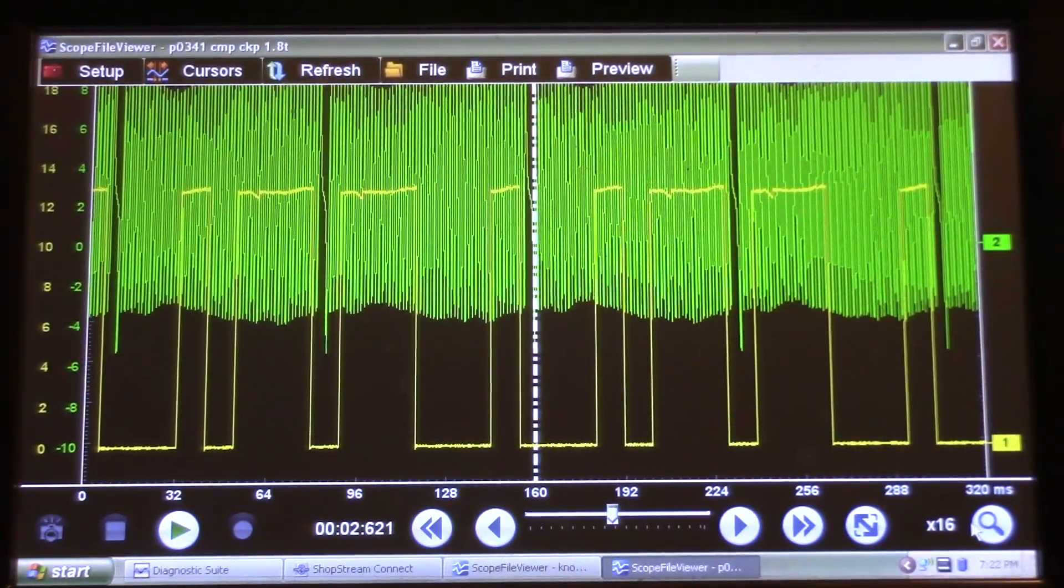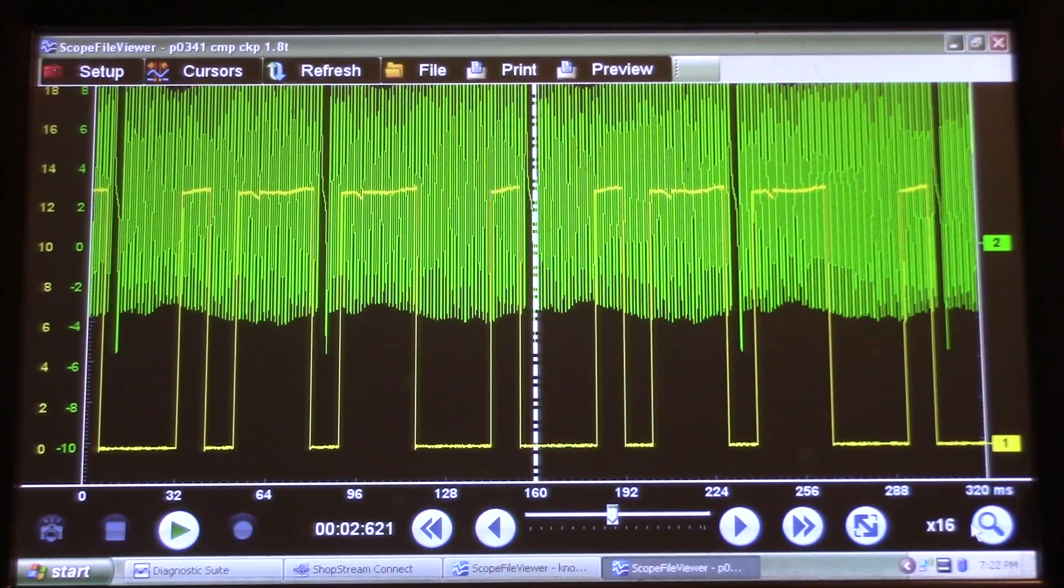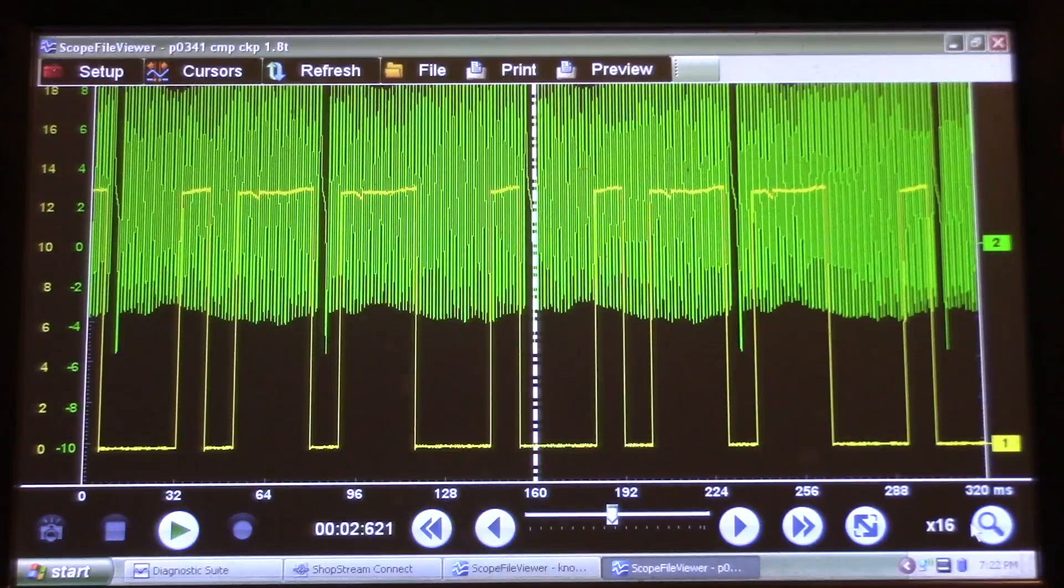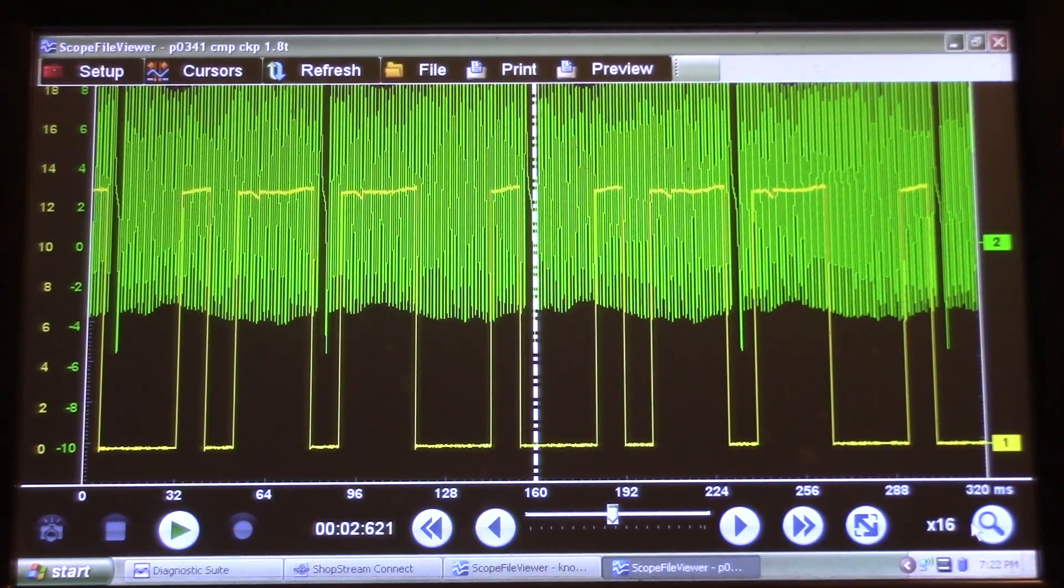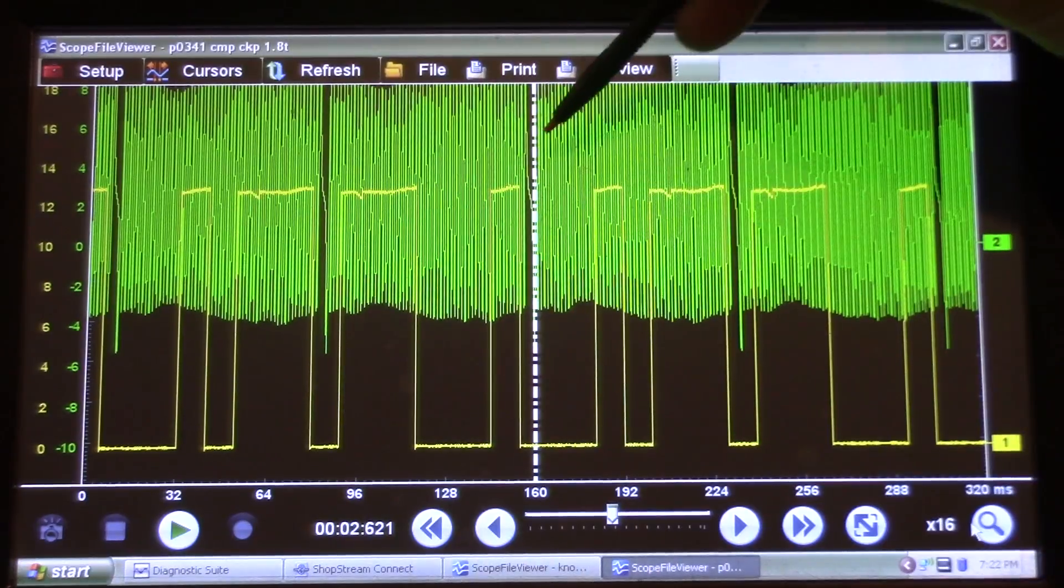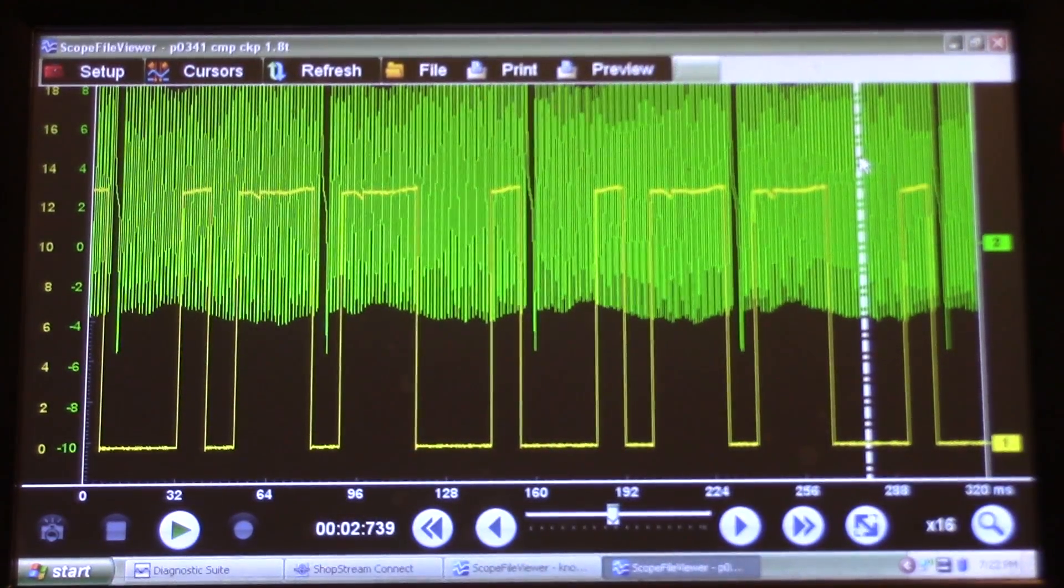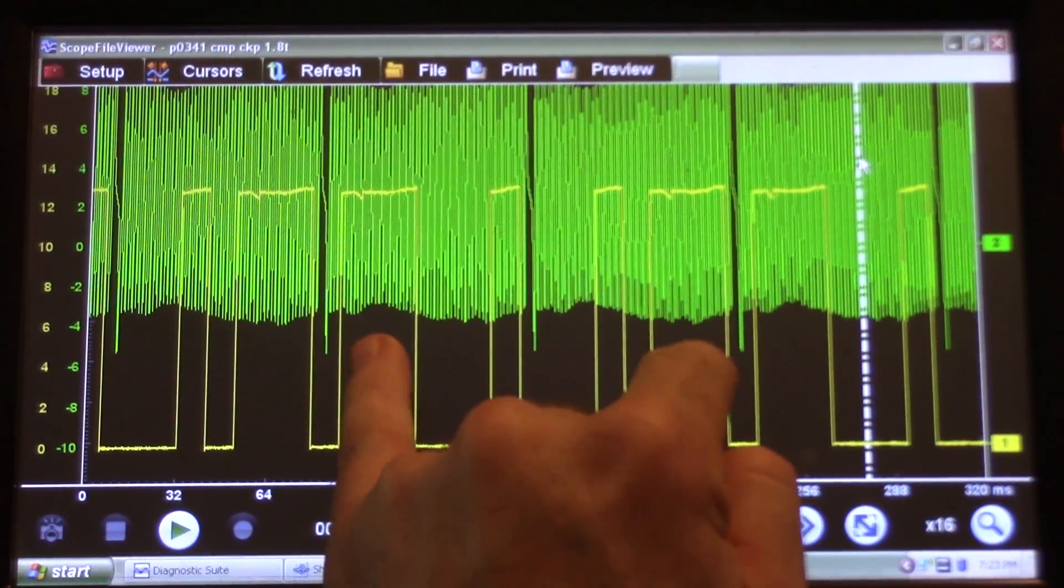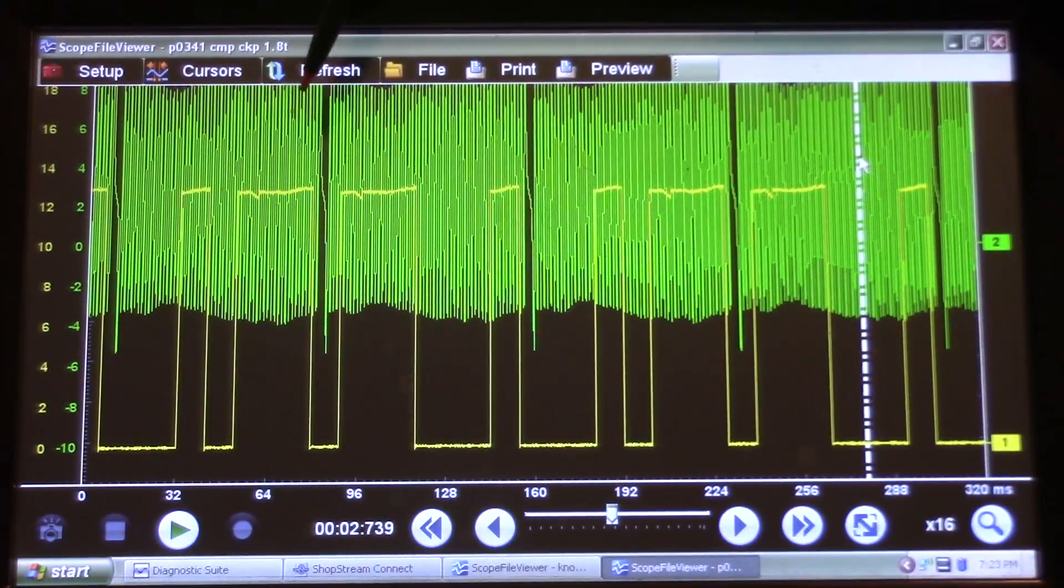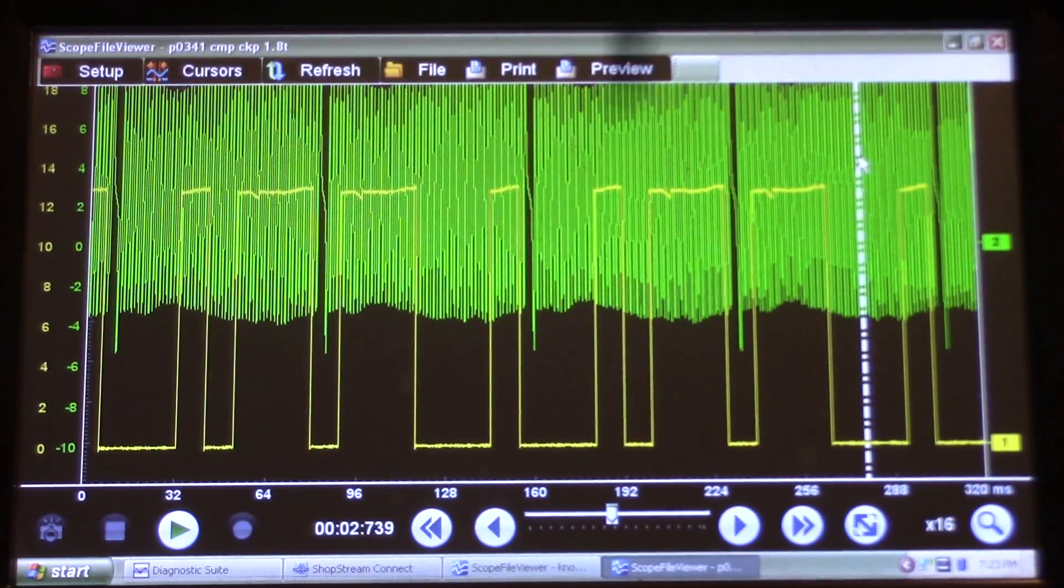All right guys, so this is the cam crank waveform that we took off the vehicle initially. Green trace is my crank, yellow trace is my cam sensor. So right here, we're going to take 720 of the crank between here and here. And two rotations of the crank is one rotation of the cam.